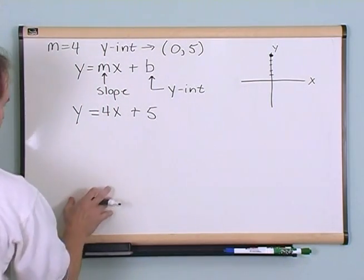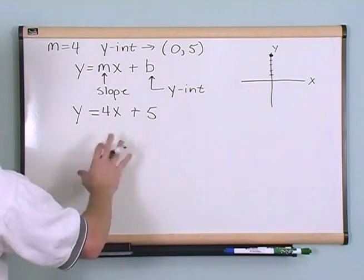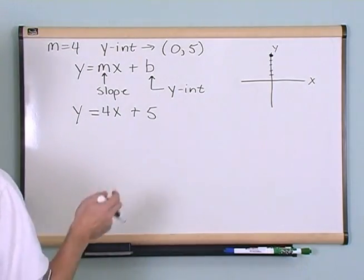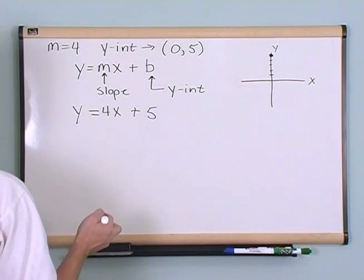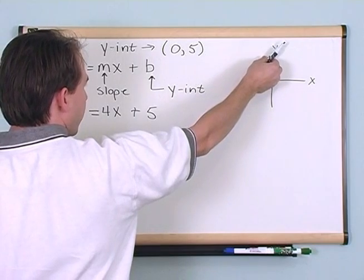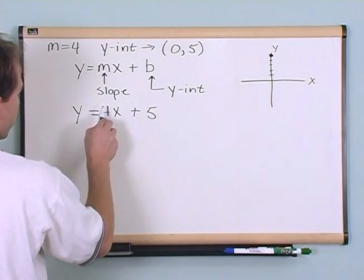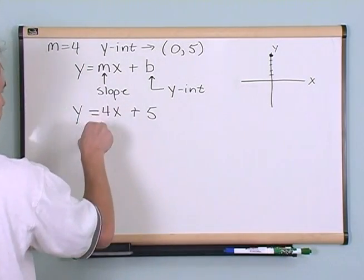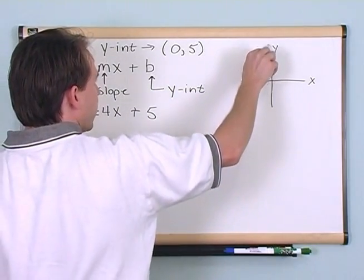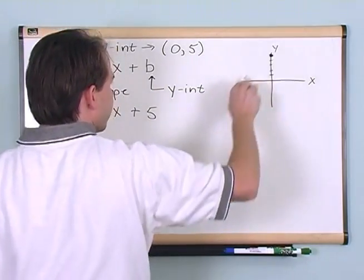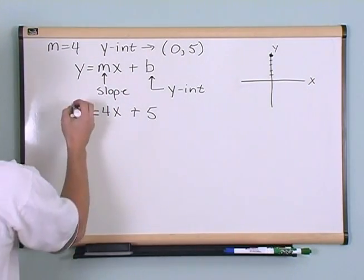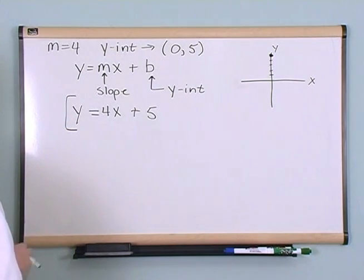You could make a table or use other methods to get all the points and figure out what this line looks like. You can see it has a positive slope, so it's going to slope upward. Rise over run is four on the rise and one on the run. So the equation of this line is y = 4x + 5.